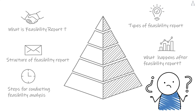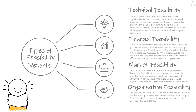So far, we have learned about the feasibility report, its key elements, the structure of the feasibility report, and the steps for conducting a feasibility analysis. Now, there is another factor — the type of feasibility report — which also determines the content of your feasibility report. You might also be curious: once you submit a feasibility report, what happens next in the business process? All kinds of feasibility reports can be divided into four categories: technical feasibility, financial feasibility, market feasibility, and organizational feasibility.